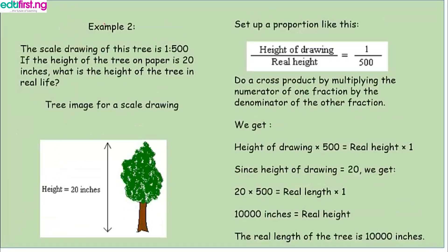Example two: the scale drawing of a tree is 1 to 500. If the height of the tree on paper is 20 — as you can see here, the height of the drawing is 20, not the real height — we set up the proportion: height of the drawing over real height equals the scale, which is 1 to 500. Then we cross multiply: height of drawing times 500 equals real height times 1.